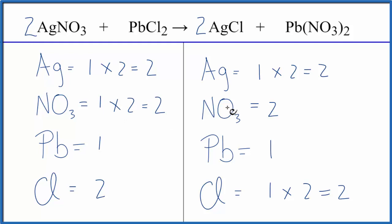So by counting this nitrate here, this polyatomic ion, as one item, because it appears here and then again here, makes it a lot easier to balance.